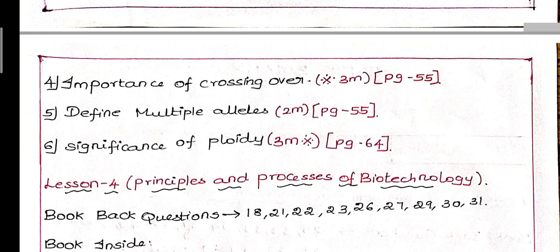Fourth question: Importance of crossing over, page number 58. This is the question, importance of crossing over. Fifth question: Define multiple alleles, that is definition, importance reduced, definition 2 mark, page number 55. Next, significance of ploidy, also 3 mark important, page number 64.